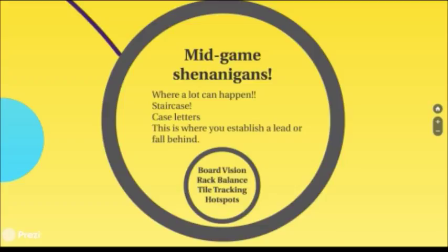Because there are a lot more tiles on the board in the mid-game, you've really got to consider things like board vision — your ability to see the hot spots on the board that make it really important to score and get those points even without bonusing. Rack balancing is still really important throughout the whole game. This is where tile tracking starts to come in: knowing the vowel-to-consonant ratio of the pool, whether there are any scarce letters, which letters are becoming less frequent so you can hold on to them, or whether important hooks are still left in the pool.